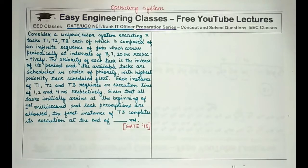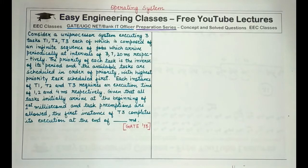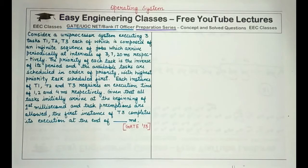Given that all the tasks initially arrive at the beginning of the first millisecond and task preemptions are allowed, the first instance of T3 completes its execution at the end of blank milliseconds. It's a numerical type question in which you have to perform all the given operations and fill in the blank.